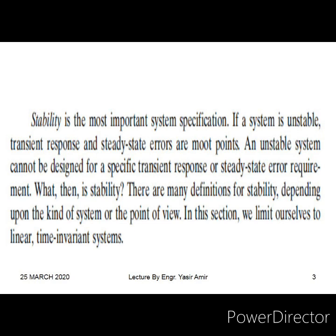Another situation is that the steady state comes but it is of a very special nature — the way the output should be is not right, it keeps on increasing with the passage of time. In other words, there is some error at the output that keeps on growing. The transient response has died away, but the steady state is very different from what it should be — again, the system will be called unstable.